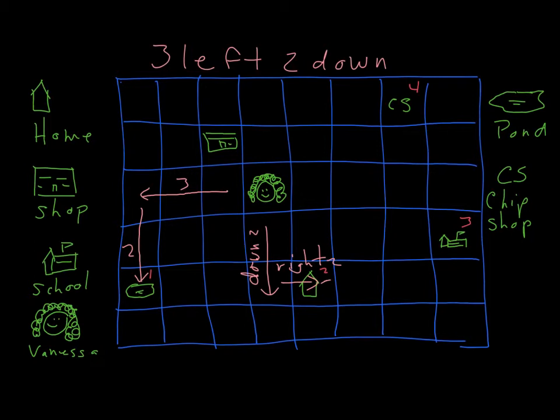Okay, now to get to the school, she can go along here and then down. So she can go right and then down, or she can go down and then right. Again, it doesn't really matter. But she's going to go, if we go this route, she's going to go one, two, three, four right. And then one down.